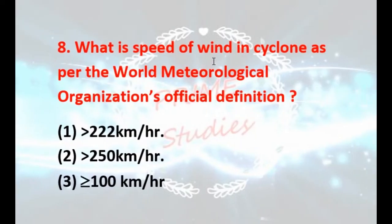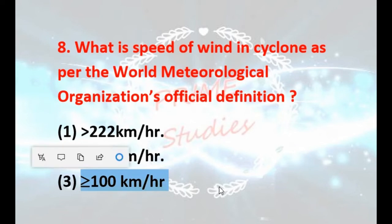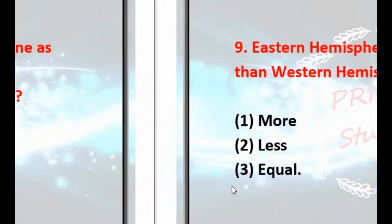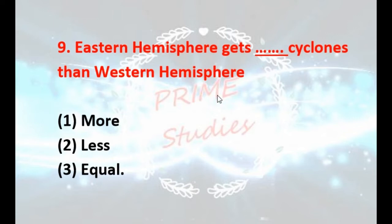What is the wind speed in cyclones as per the World Meteorological Organization's official definition — more than 22 km/h, more than 250 km/h, or more than or equal to 100 km/h? Your answer is the third: more than or equal to 100 kilometers per hour. Does the Eastern Hemisphere get more, less, or equal cyclones compared to the Western Hemisphere? Your answer is more — it has more cyclones.